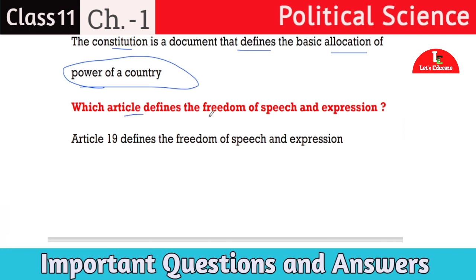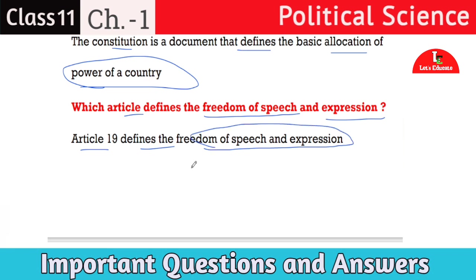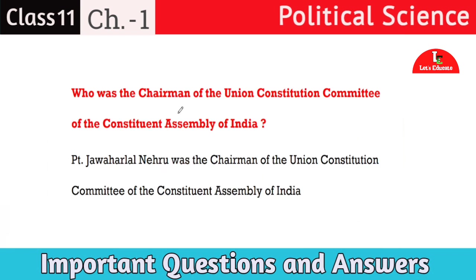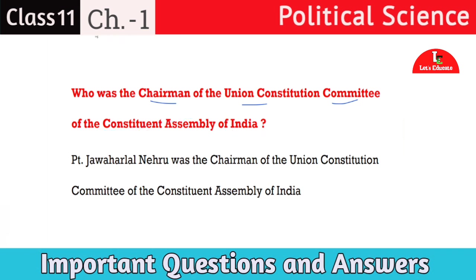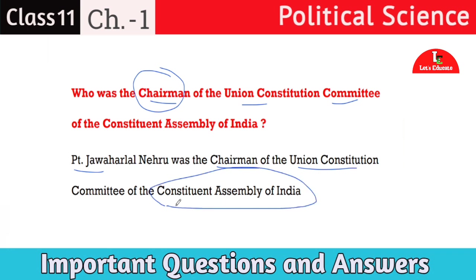Next question: which article defines the freedom of speech and expression? Article 19 defines the freedom of speech and expression. Next question: who was the chairman of the Union Constitution Committee of the constituent assembly? Pandit Jawaharlal Nehru was the chairman of the Union Constitution Committee of the constituent assembly.